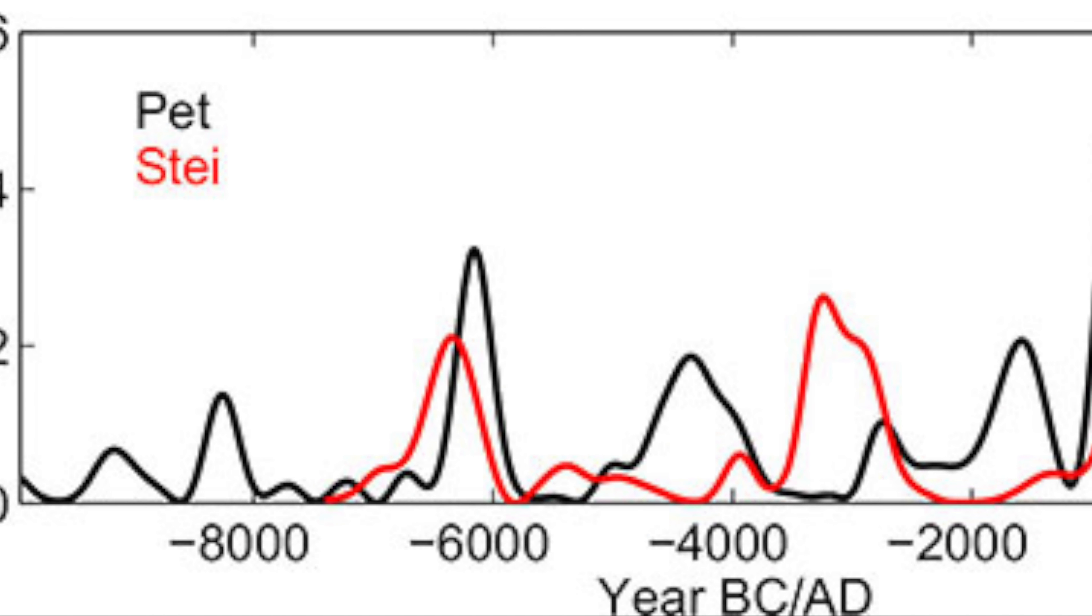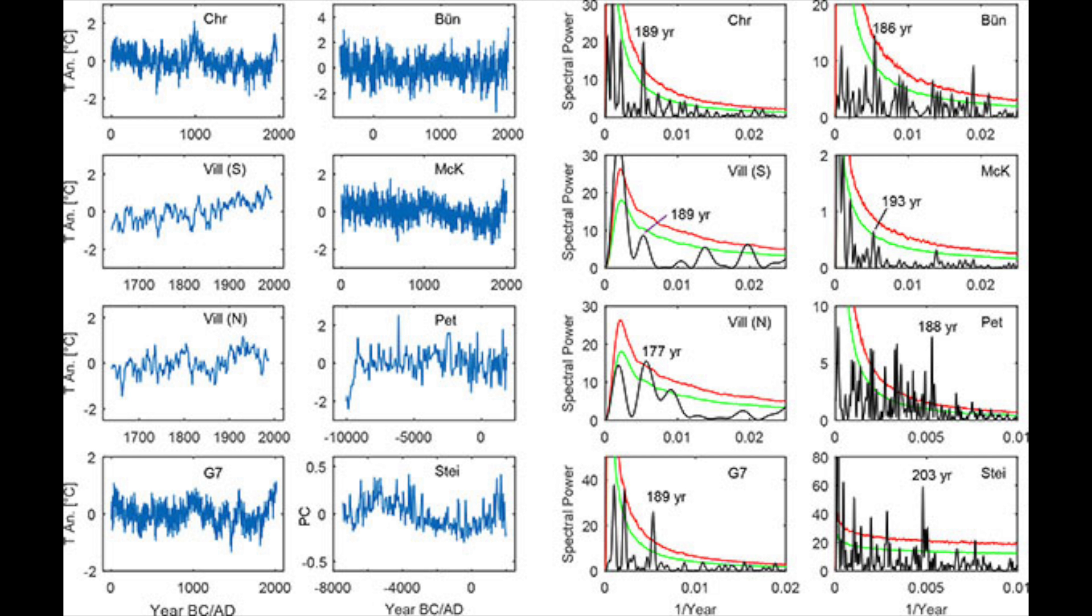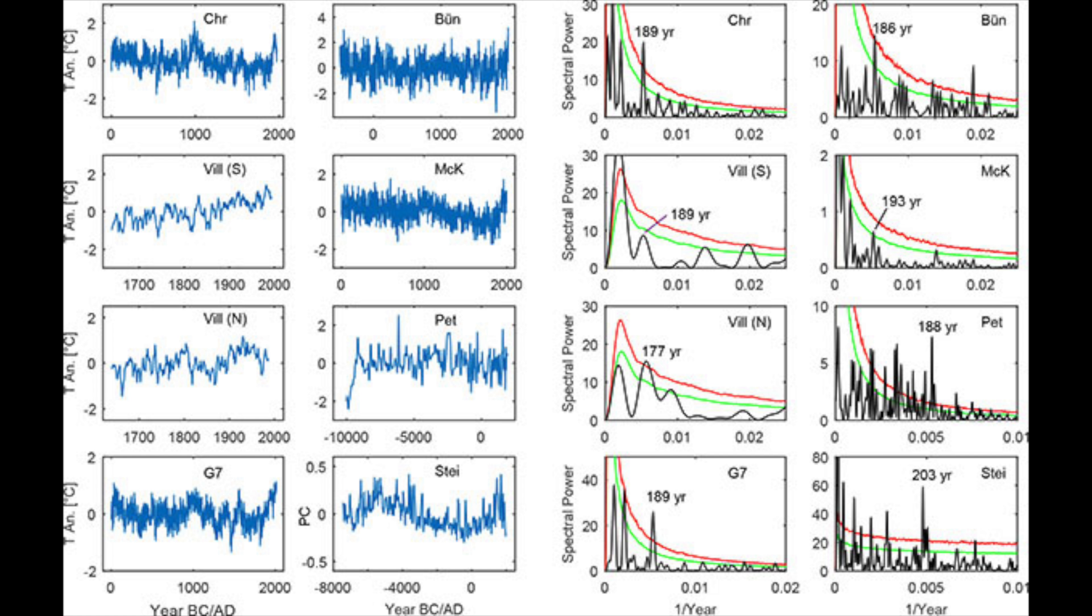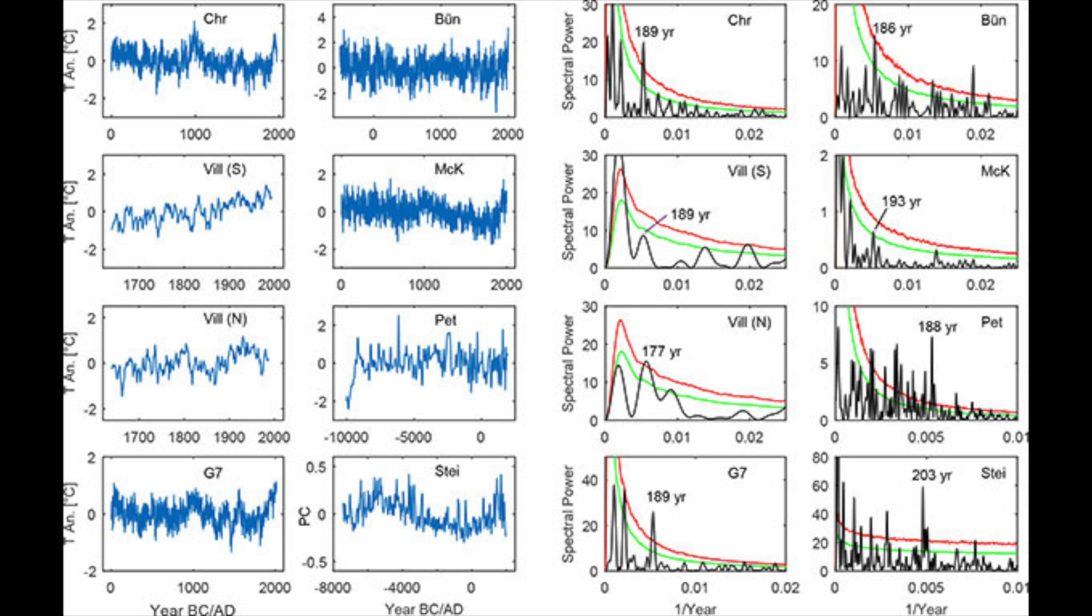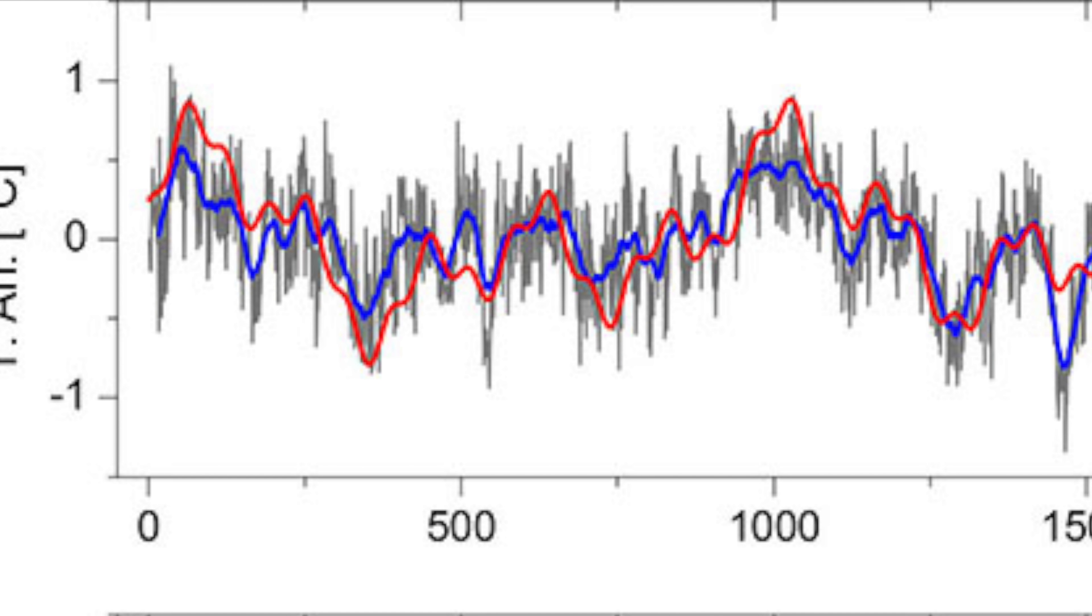The Fourier spectrum of a global temperature record G7 composed of high-quality temperature proxies worldwide and recent instrumental data demonstrate the dominance of three climate cycles: the 1,000-year Eddy cycle, the 460-year cycle which is not named but frequently reported, and the 190-year DeVries-Suess cycle. These three sines represent the 31-year running mean of G7 with a remarkable Pearson correlation of 0.84, indicating their importance for climate.